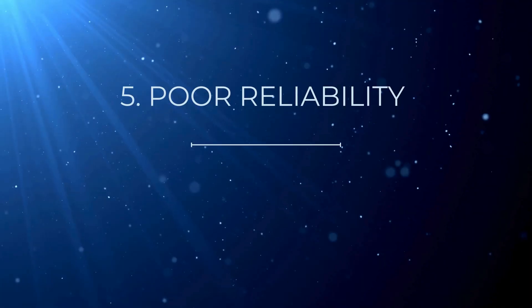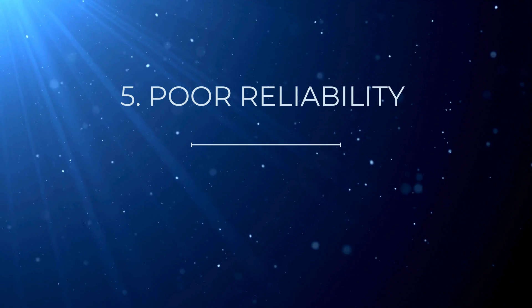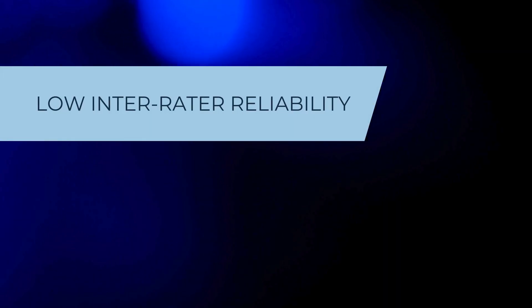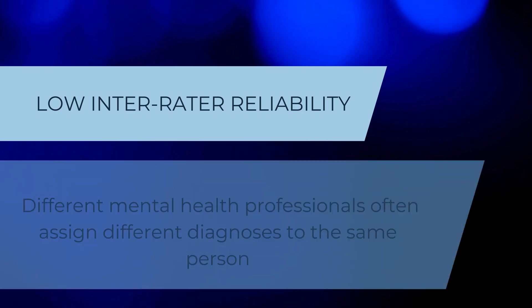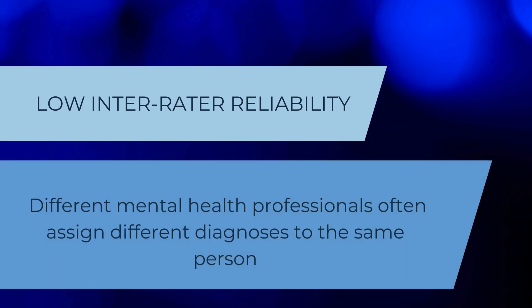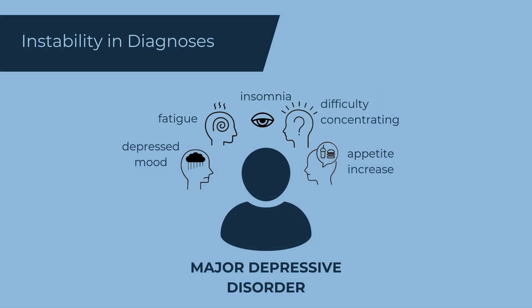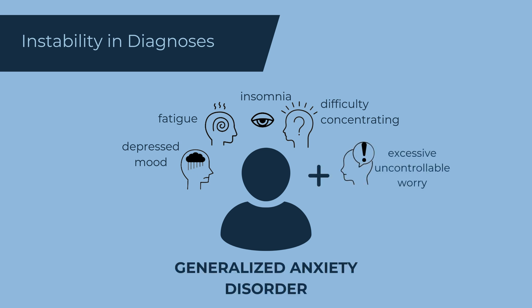Poor reliability. The blurred boundaries from symptom overlap also relate to the low interrater reliability for many diagnoses, which means that different mental health professionals often assign different diagnoses to the same person. Further, the arbitrary thresholds for meeting enough criteria create instability in the diagnoses over time. For example, dropping a symptom or adding a symptom can change the diagnosis an individual receives.